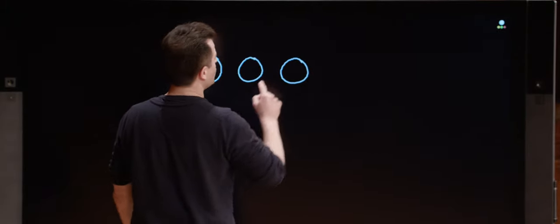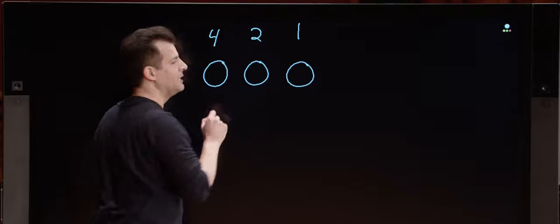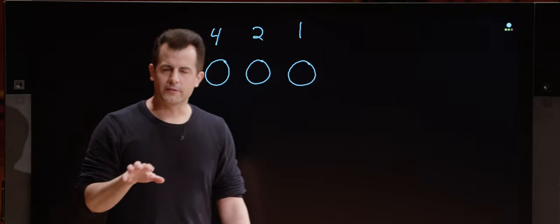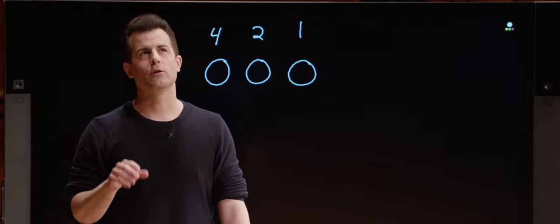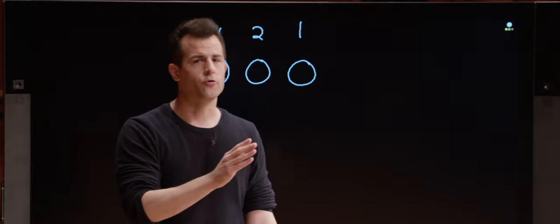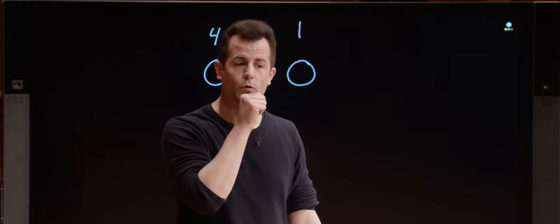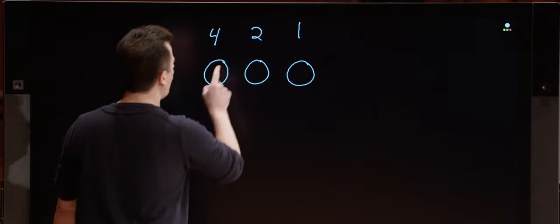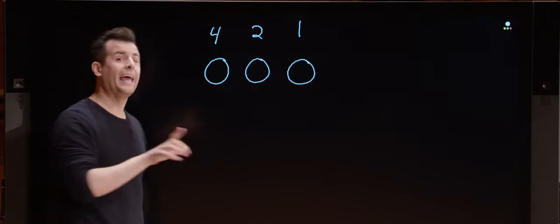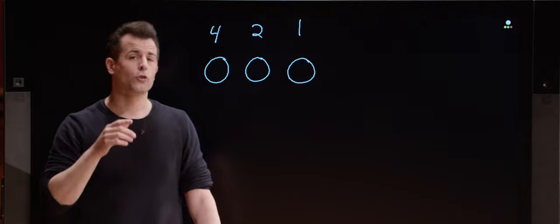In the computer world, these places are just a little different. This is still the ones place, but the next one is not the tens place anymore — it's the twos place. And this next place is not the hundreds place — it's the fours place. There's still a pattern: previously it was 1, 10, 100, and if we kept going, 1,000, 10,000, 100,000. Here, too, there's a pattern: 1, 2, 4, and if I kept going, 8, 16, and 32.